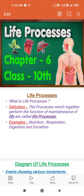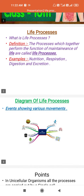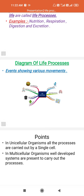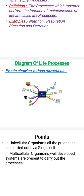Hi guys, today we are going to see the introduction and Part 1 of Life Sciences Chapter 6, Class 10 — Life Processes. Definition: the processes which together perform the function of maintenance of life are called life processes. Examples include nutrition, respiration, digestion, and excretion. Here we see a diagram of life processes showing various elements: nutrition, reproduction, excretion, growth, movement, respiration, and sensitivity.